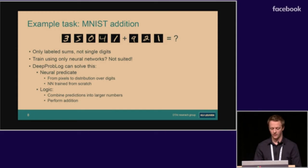DeepProbLog can solve this. How? The neural predicate would go from pixels to distribution over digits. It's important to note that DeepProbLog can train these neural networks from scratch. In the logic, we will combine predictions to form the multi-digit numbers and perform the addition in logic.